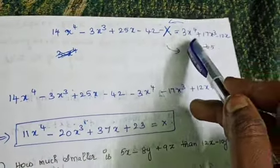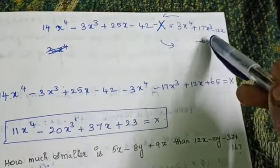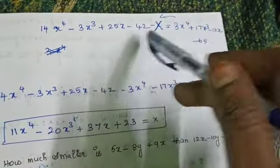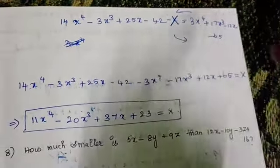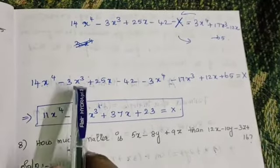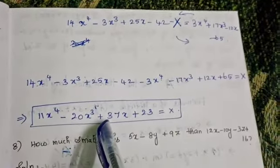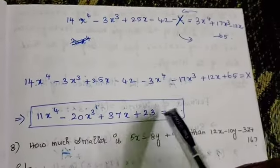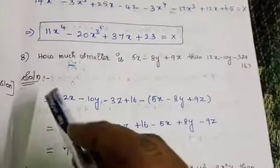When the right-hand side expression moves to the left, every positive term becomes negative and every negative term becomes positive. So: 3x⁴ minus 3x⁴; 17x³ comes this side as minus 17x³; minus 12 becomes plus 12x; minus 65 becomes plus 65, equal to x. Combining like terms: 14 minus 3 gives 11x⁴; minus 3 minus 17 gives minus 20x³; 25 plus 12 gives 37x; minus 42 plus 65 gives plus 23. So x equals 11x⁴ minus 20x³ plus 37x plus 23.